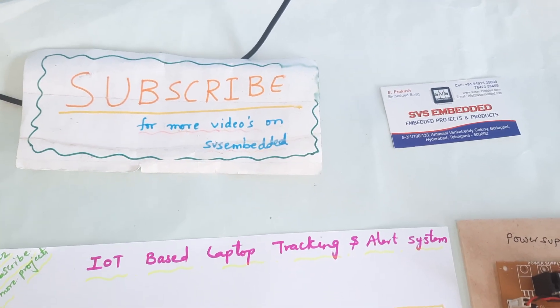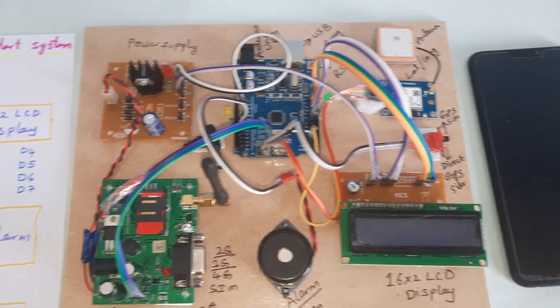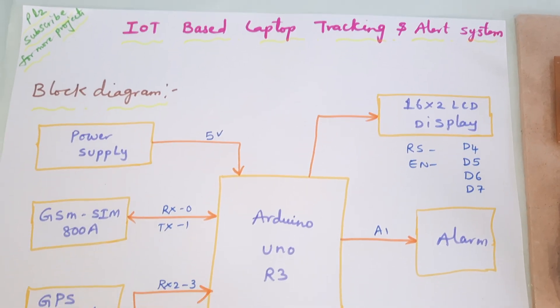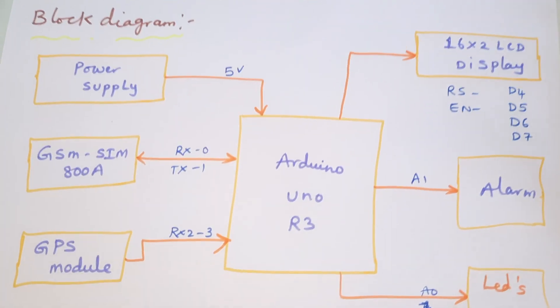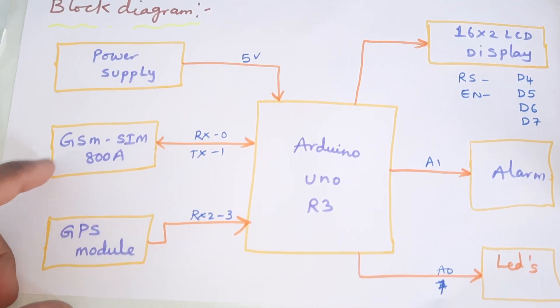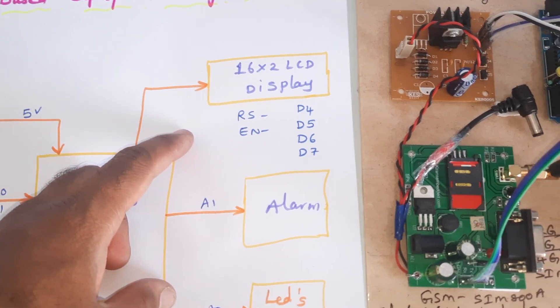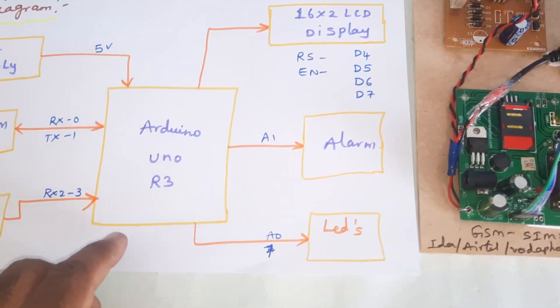Hi, we are from SVS Embedded. The project title is IoT Based Laptop Tracking and Alerting System. We are using Arduino Uno R3, GSM SIM 800A, GPS module, a 16x2 LCD display, alarm, and LEDs.